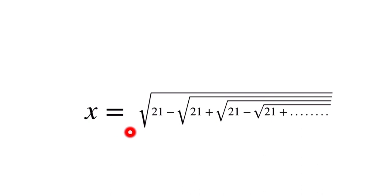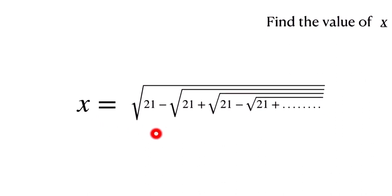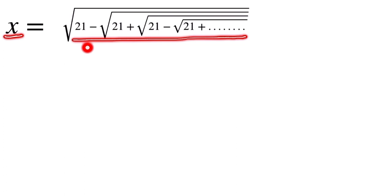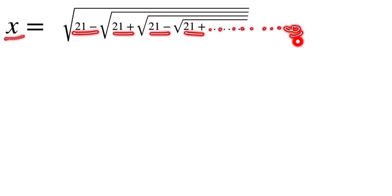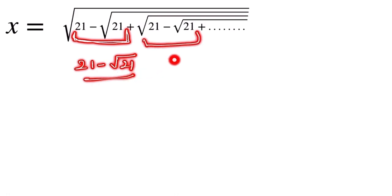Welcome back. Today we are going to solve this question where we have to find the value of x. Can you solve this question? If you can, then pause the video and take a try. Otherwise, let's see the solution. So this is our question: x is equal to the square root of 21 minus the square root of 21 plus the square root of 21 minus the square root of 21 plus, and this goes to infinity.